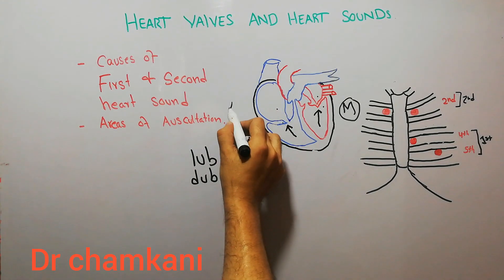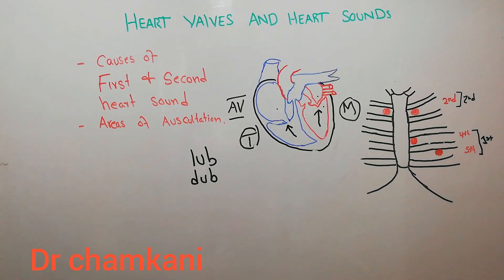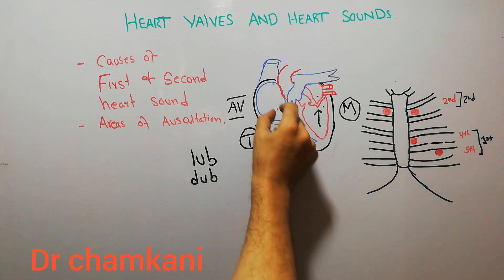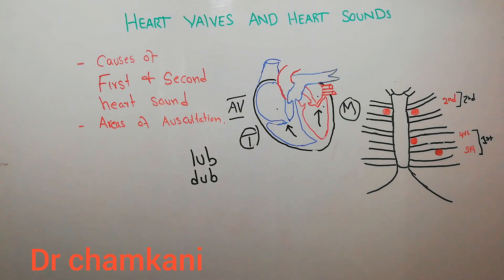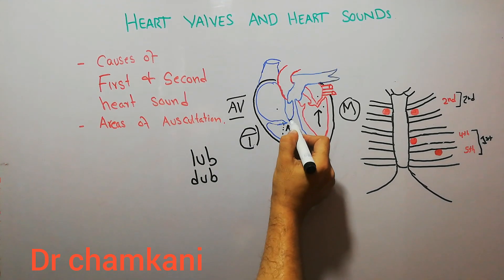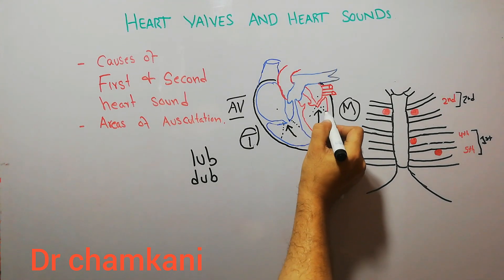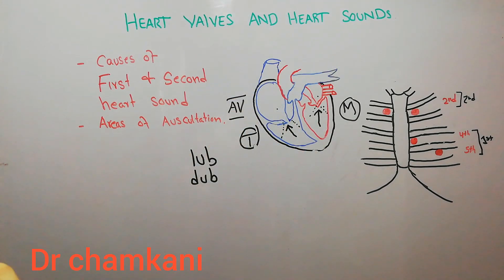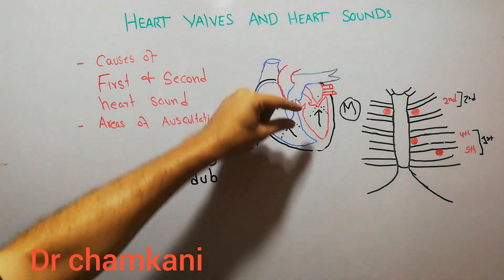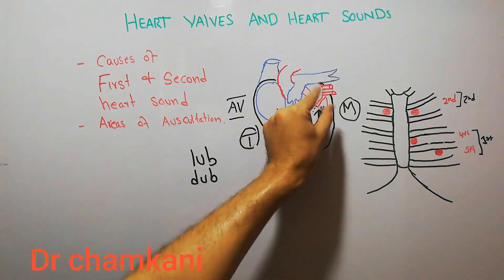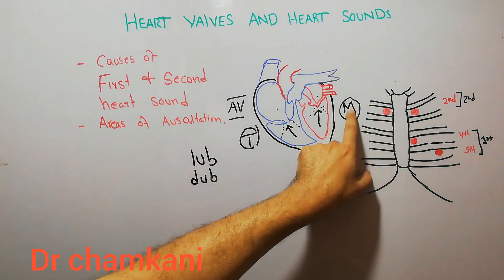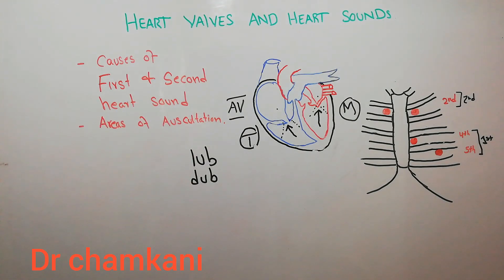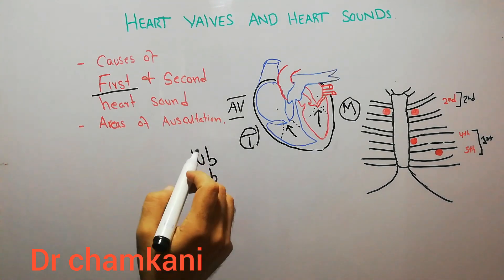The atrioventricular valves allow blood from the atria into the ventricles but will not allow blood from the ventricles back into the atria in a normal heart. These valves are attached with fibers — chordae tendineae and papillary fibers — which help the valves close but prevent them from bulging back into the atria. With the closure of these two valves, the tricuspid and mitral, a heart sound is generated which is the first heart sound, heard as 'lub'.